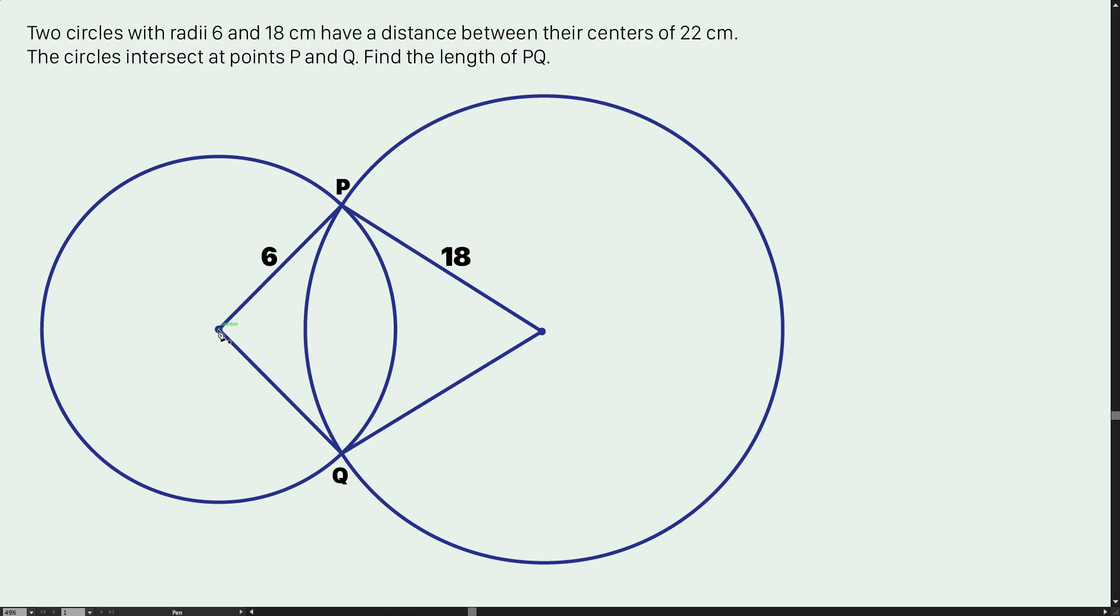Let me draw lines connecting from center to center and from P to Q. The intersect of the two red lines is forming a right angle to each other, and let's assume that this distance is x, so this part will be 22 minus x because the distance between the centers is 22 cm.